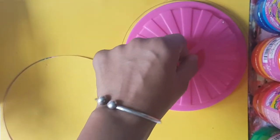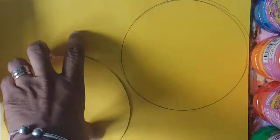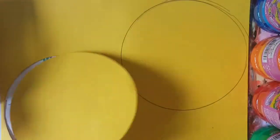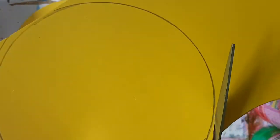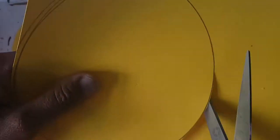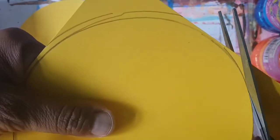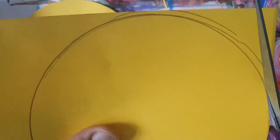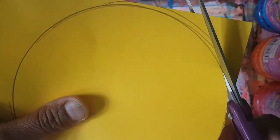First of all, you need to get something circular to trace around, which I've done. And I already cut one side, and I'm going to go ahead and cut the other side. Boys and girls, I am recycling the cardstock that I used last week for last week's art activity. And yeah, it's good to recycle.